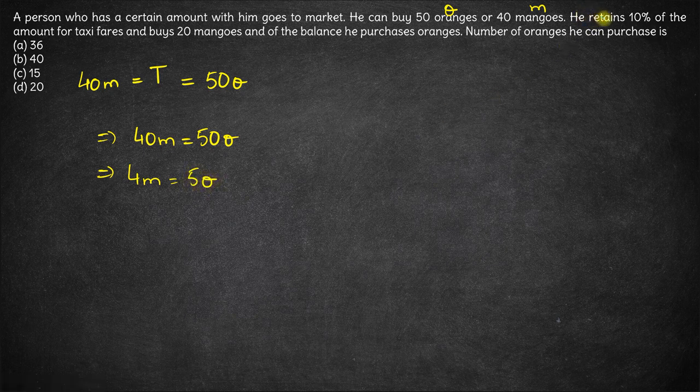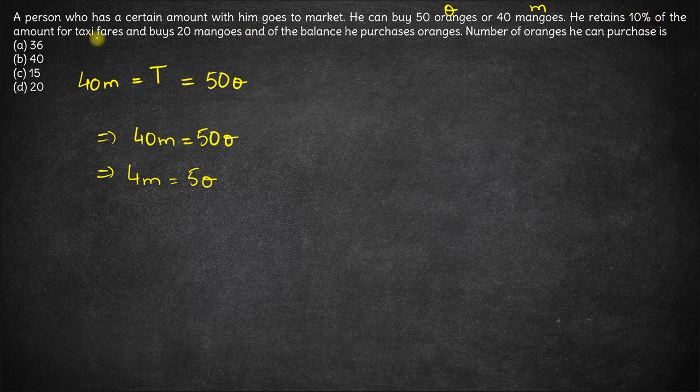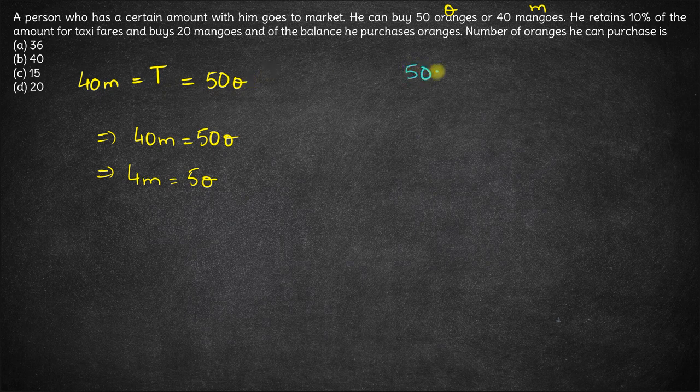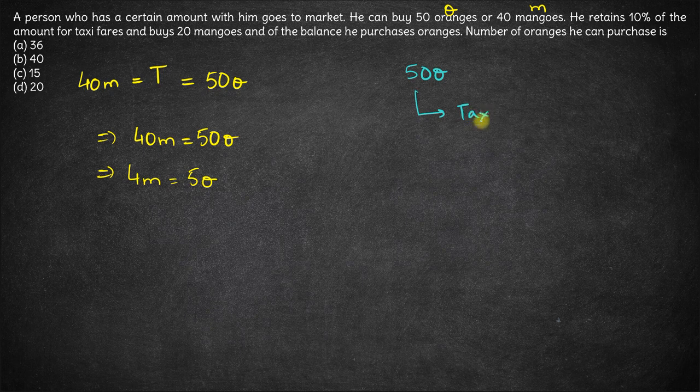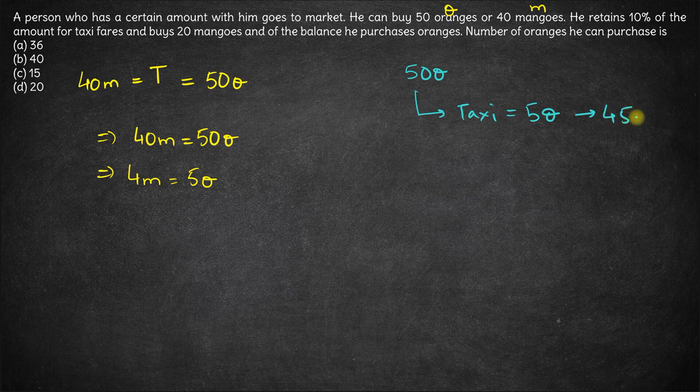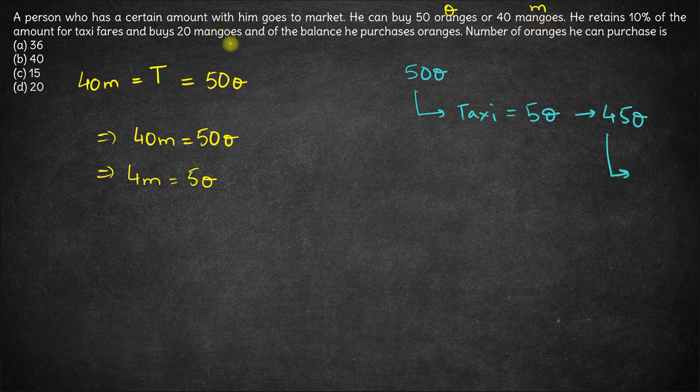Next, now what he does is he retains 10% of the amount for taxi fare and buys 20 mangoes. Let's say the total amount with him is 50O. He initially has 50O rupees, out of which he retains 10% for taxi, that means 5O. The remaining amount is 45O. Out of this 45O, he buys 20 mangoes.